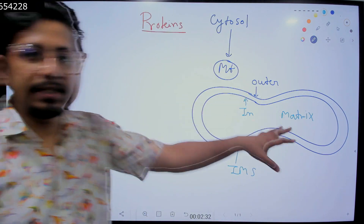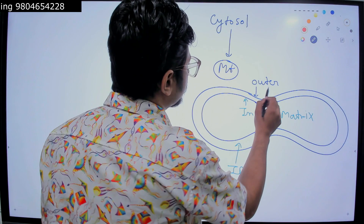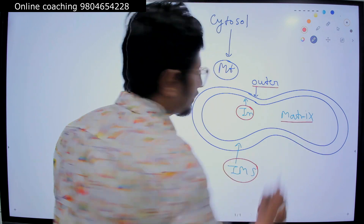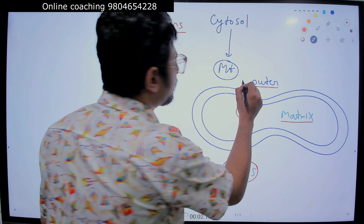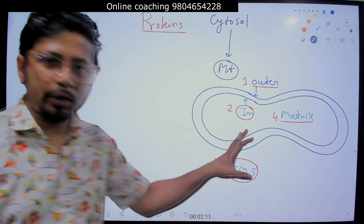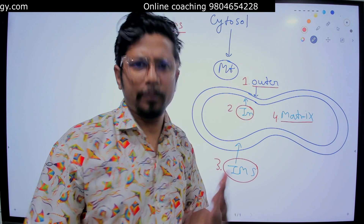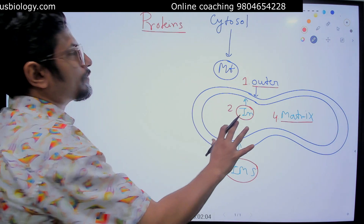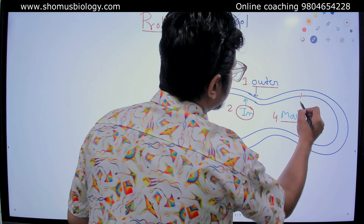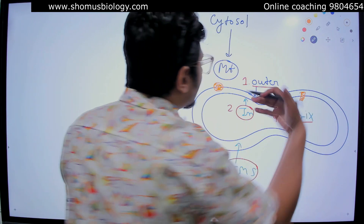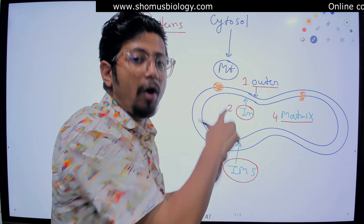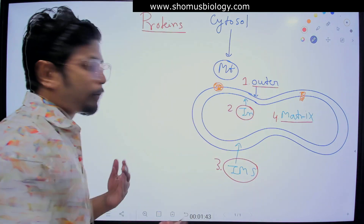Proteins that need to be delivered inside mitochondria can be delivered to different locations — either to the outer membrane, the inner membrane, the intermembrane space, or the matrix. Sequentially: outer membrane comes first, then inner membrane, then intermembrane space, and then matrix. These are the four locations where mitochondria require proteins and enzymes for regular functionality. What we need to remember is the names of all the different proteins involved and how they function.